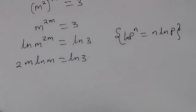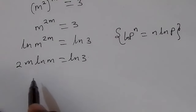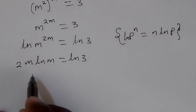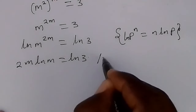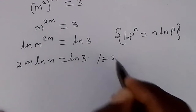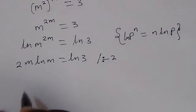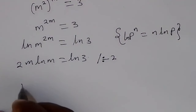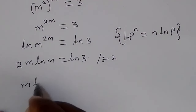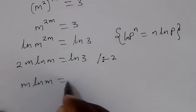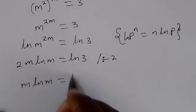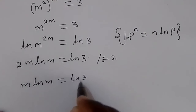Now let us divide both sides of this equation by 2. So we have m·ln(m) equals ln(3) over 2.